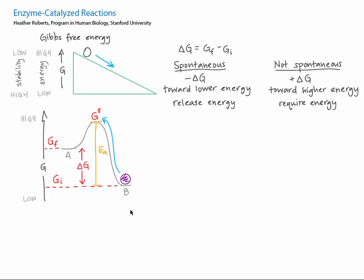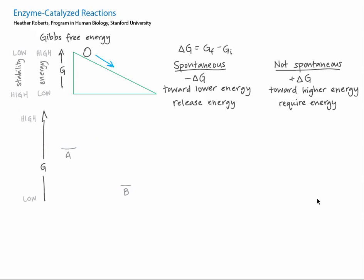The reverse process also has an activation energy, which in this case is larger than the activation energy of the forward process. These activation energies affect the rate at which the marble moves. The study of rate is called kinetics, which is different from thermodynamics. Likewise, many chemical processes have an energy barrier that must be overcome in order for the process to take place.